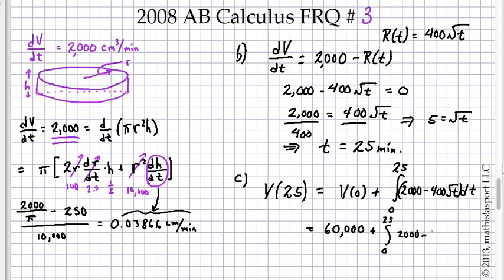And so our final answer is just this integral. I'll write it again for completeness. That is V(25) equals 60,000 plus the integral from 0 to 25 of (2,000 minus 400√t)dt.